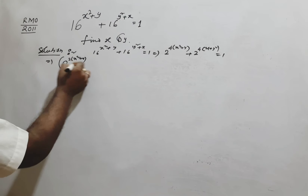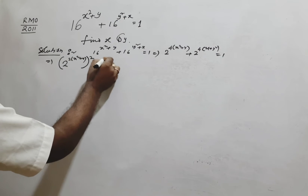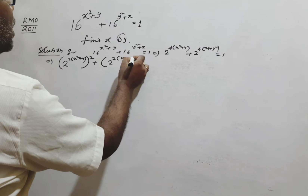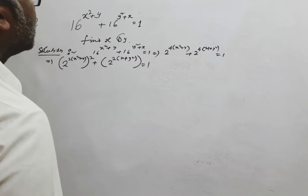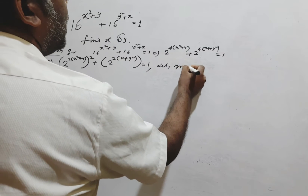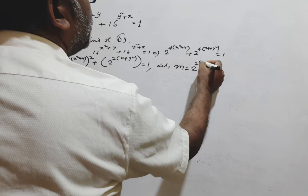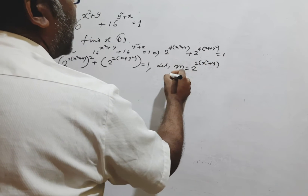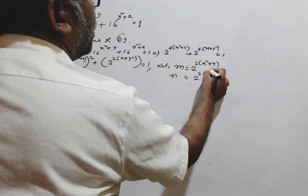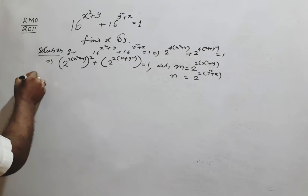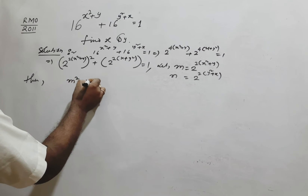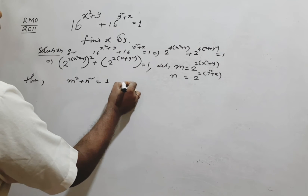Rewriting, this becomes 2 to the power 2·(x² + y) all squared, plus 2 to the power 2·(y² + x) all squared, equals 1. Let m = 2 to the power 2(x² + y) and n = 2 to the power 2(y² + x).